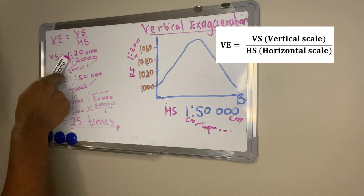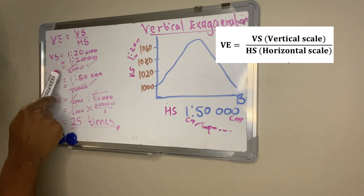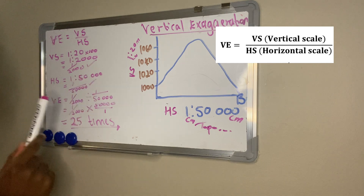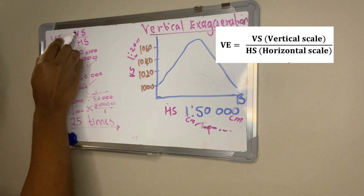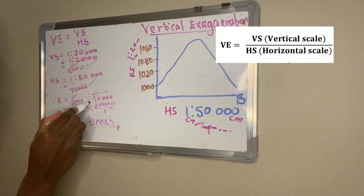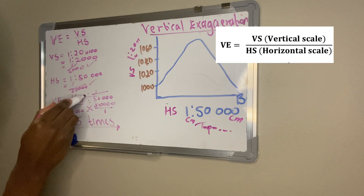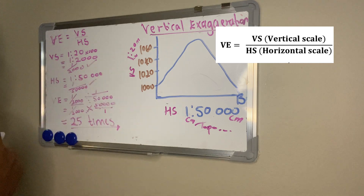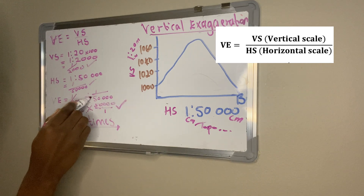Quick recap: VS is 1 to 20, which is in meters — multiply by 100 to get centimeters, giving 1 to 2,000, written as 1 over 2,000. Horizontal scale is 1 to 50,000, already in centimeters, written as 1 over 50,000. Apply the formula: VE equals 1 over 2,000 divided by 1 over 50,000. Change division to multiplication and invert the right side to get 50,000 over 1. Answer: 25 times. Note there may be a mark for correctly changing the division sign to multiplication.